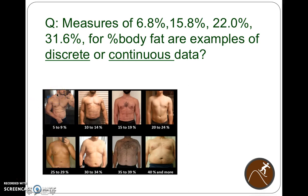Using the percent body fat example: we measure percent body fat in four people and get values of 6.8%, 15.8%, 22.0%, and 31.6%. Percent body fat can be measured by water displacement — putting someone in a water bath and measuring how much water is displaced — or using a caliper to measure certain parts of the body. So are these data discrete or continuous? They're all quantitative, but are they discrete or continuous?